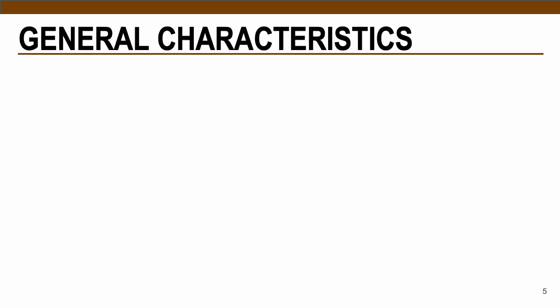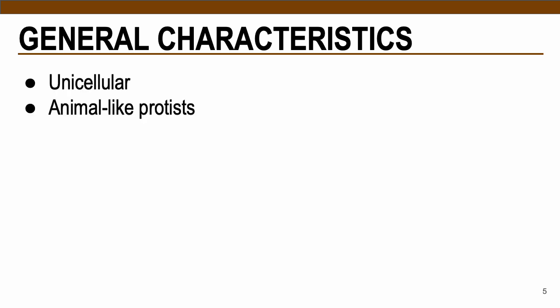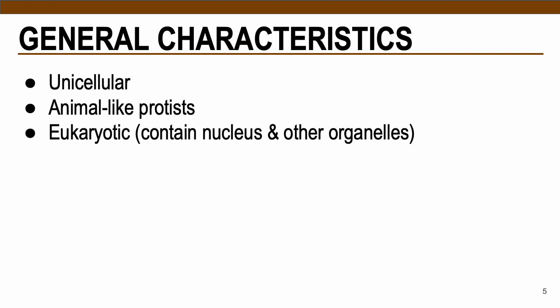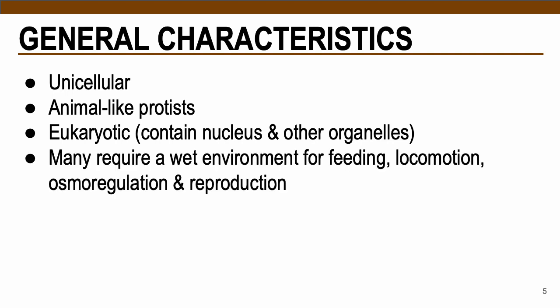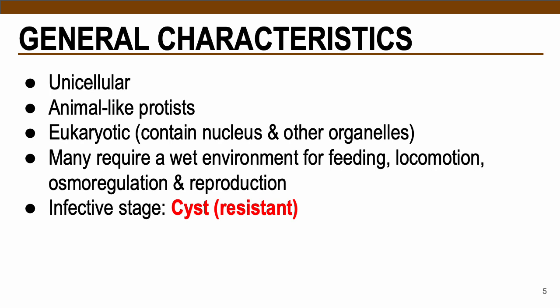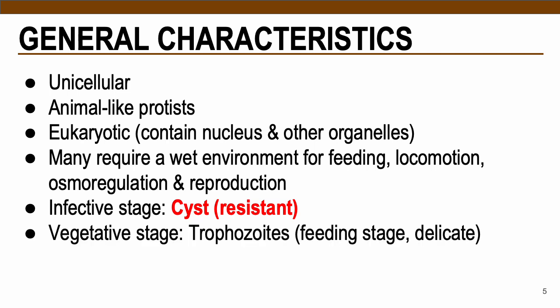Here are some general characteristics of your protozoan, specifically the amoebas. Amoebas are unicellular, animal-like protists that are considered eukaryotic, meaning these particular parasites contain a nucleus and other organelles. Some stages of this parasite require a wet environment for feeding and navigating the host — for locomotion, osmoregulation, and reproduction. The infective stage of your amoebas is the cyst, which is the resistant form, while the vegetative or feeding stage is the trophozoite.